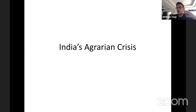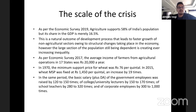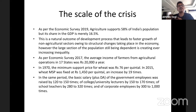Coming to the present day: according to the Economic Survey of 2019, agriculture supports about 58% of India's population, but its share in GDP is only 16.5%. GDP is effectively the cumulative value of all final products produced in the economy — a measure of how well the country is doing. So 58% of the people are making only 16.5% of the money in this country. Obviously, such a skewed ratio means these people will effectively be poor.